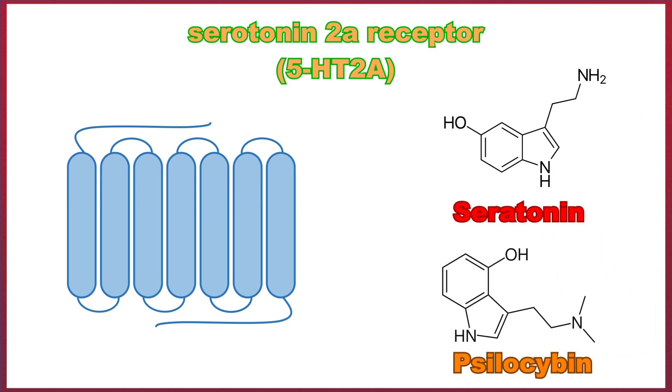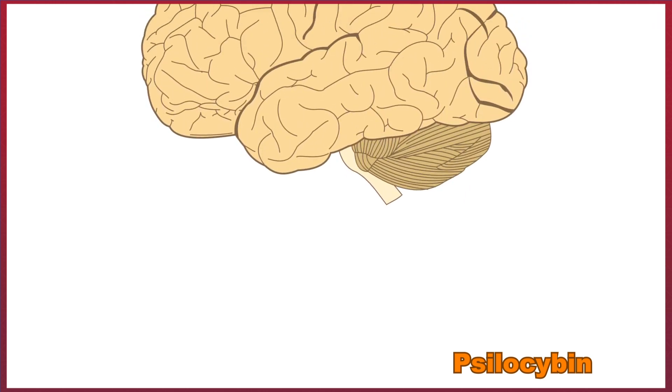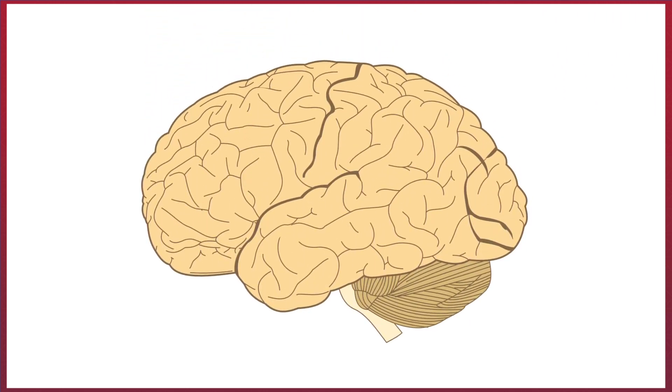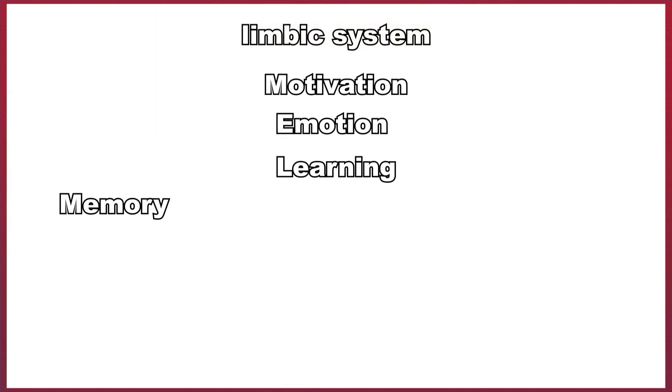These receptors are key targets for a range of psychoactive chemicals such as psilocin, due to its similar chemical structure to serotonin. The serotonin receptors are found throughout the brain, but particularly in areas of the limbic system, which has a crucial function in motivation, emotion, learning, and memory, which may be the reason behind time slowing down in-game.